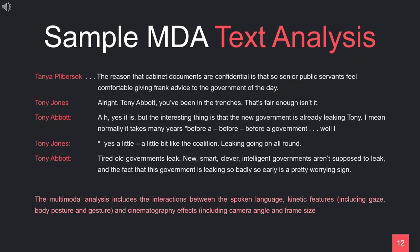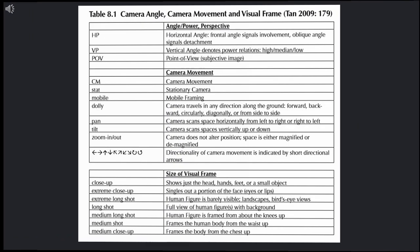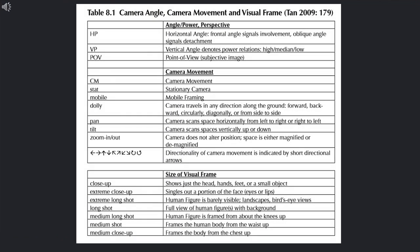This is the transcript of the television multiparty debate described above. If you conduct the multimodal analysis, it also includes the interactions between the spoken language, kinesic features including gaze, body posture and gesture, and cinematography effects including camera angle and frame size. This is a table of cinematography analysis including camera angle, camera movement, and visual frame. We'll use it when we analyze the video or picture, and we will show you an example at almost the end of this presentation with the Michelle Obama picture.